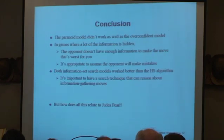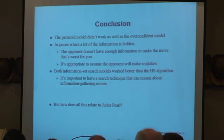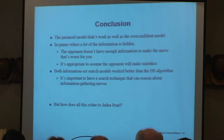Conclusion: the paranoid model, in almost all cases, didn't work as well as the overconfident model. We can conclude that in games where a lot of information is hidden, the opponent doesn't have enough information to make the move that's worst for you, so it's appropriate to assume the opponent will make mistakes. Second, both information search models work better than HS — my speculation is that it's important to have a way to reason about information-gathering moves.